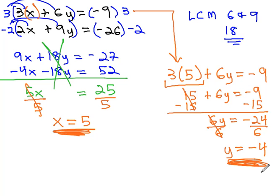We now have our values for x and y. The solution to this system is 5 comma negative 4.